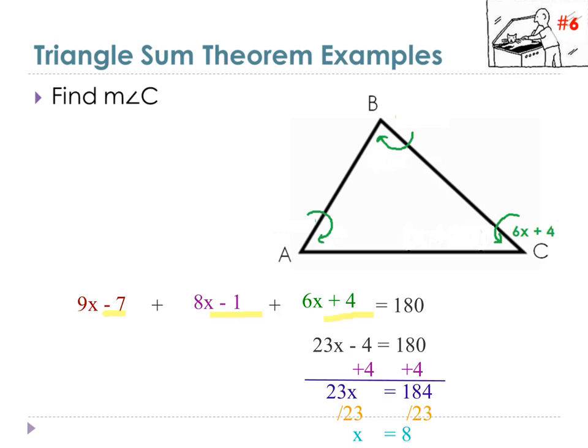We're just going to substitute those in. It's 6 times 8 plus 4. And if you put that in your calculator, or remember 6 times 8 is 48 plus 4 is 52. Angle C is 52 degrees.